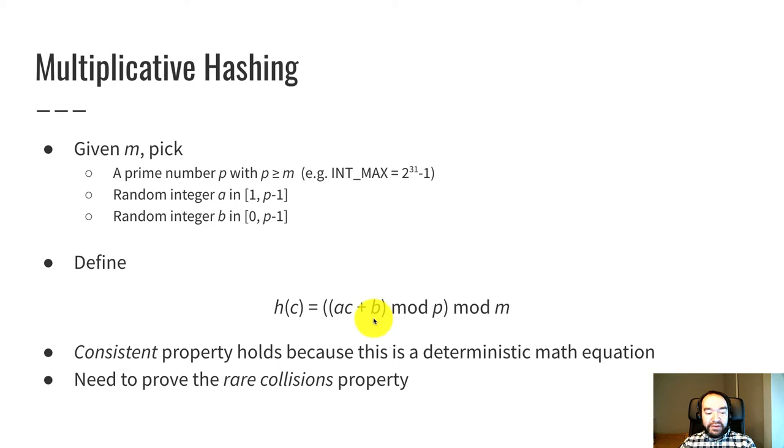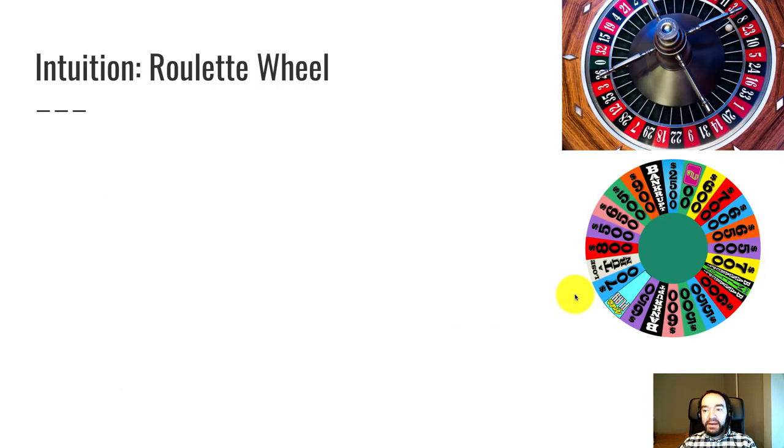What we still need to prove is the rare collision property. That one's a little bit more complicated. So before we get into a math proof of that, let me explain an intuition for why all of the outcomes are approximately equally likely.